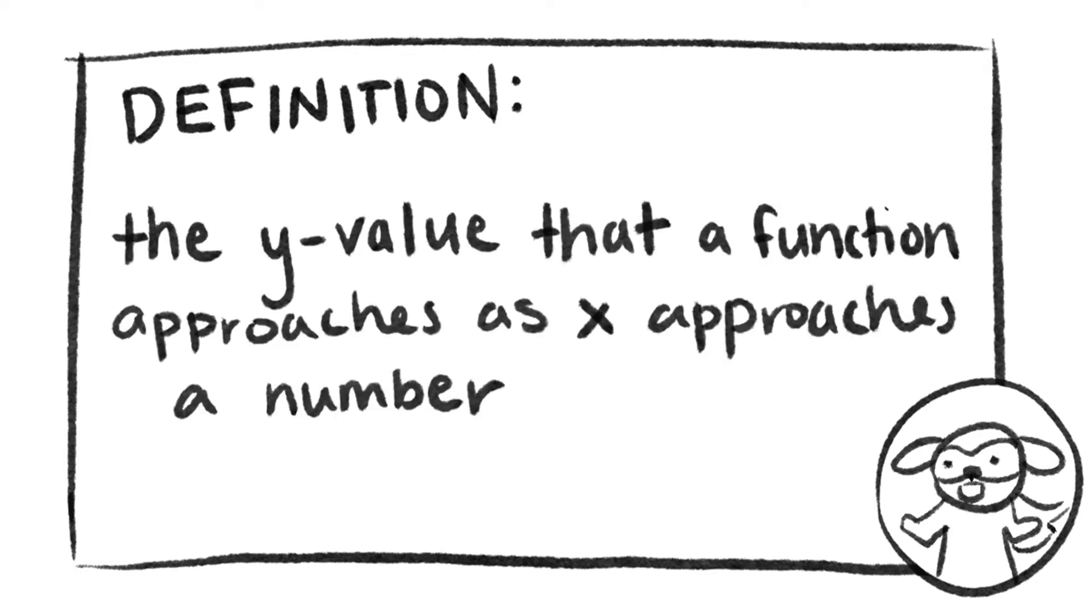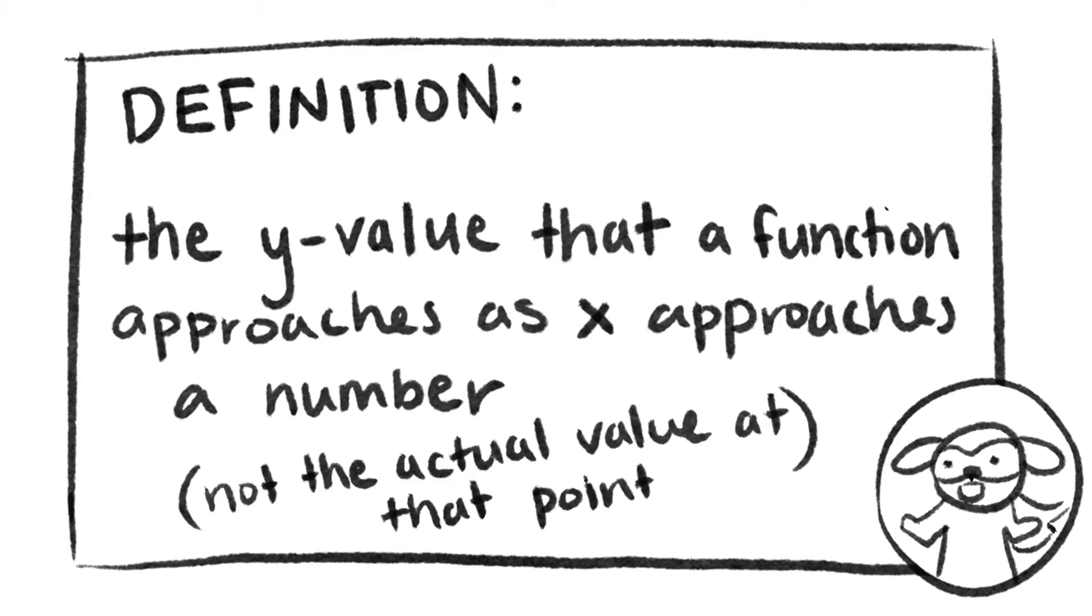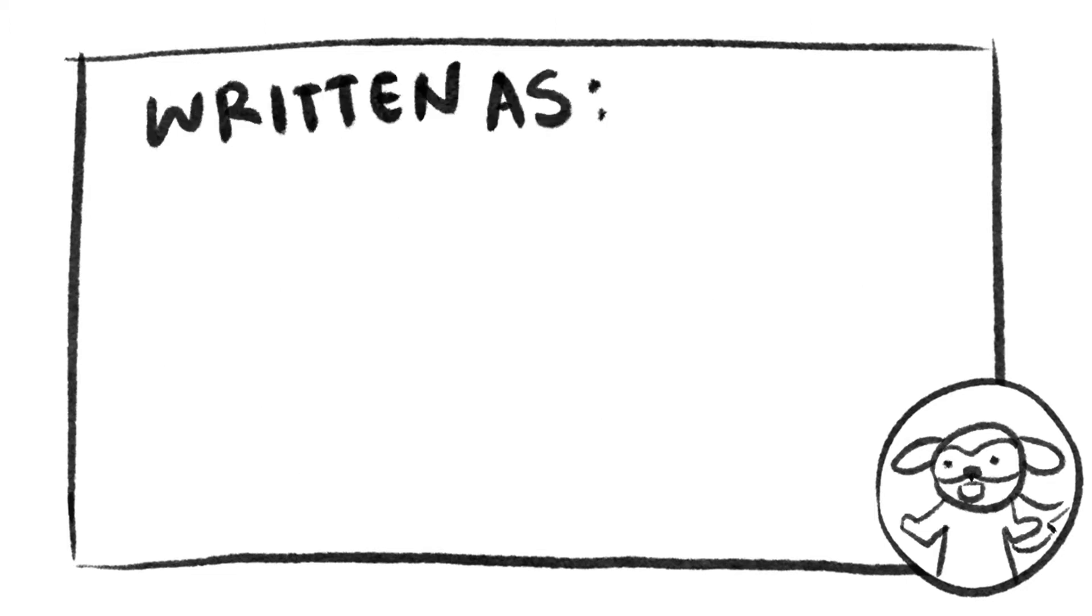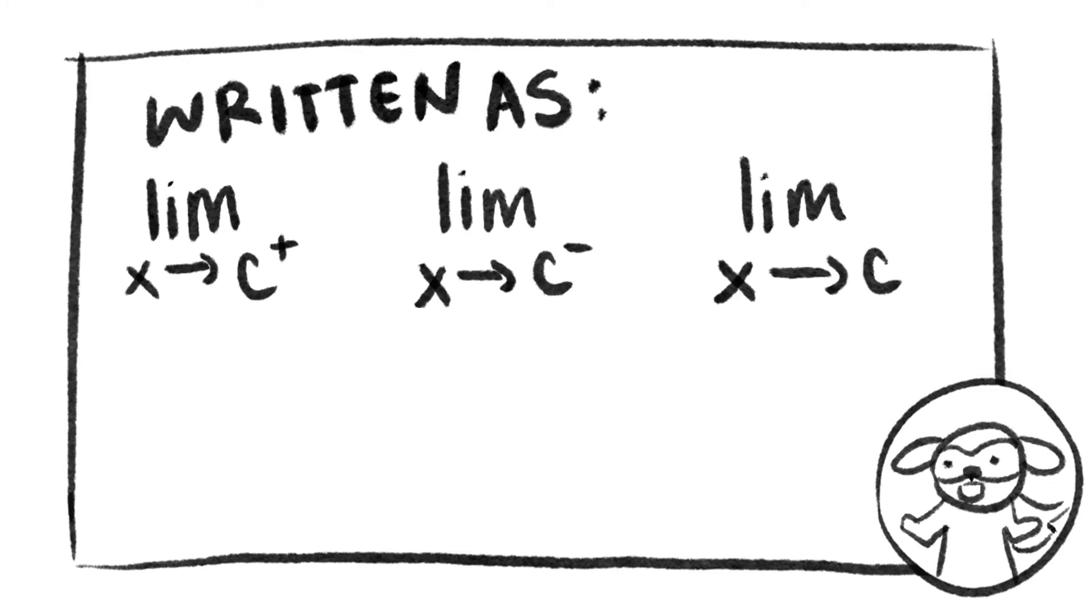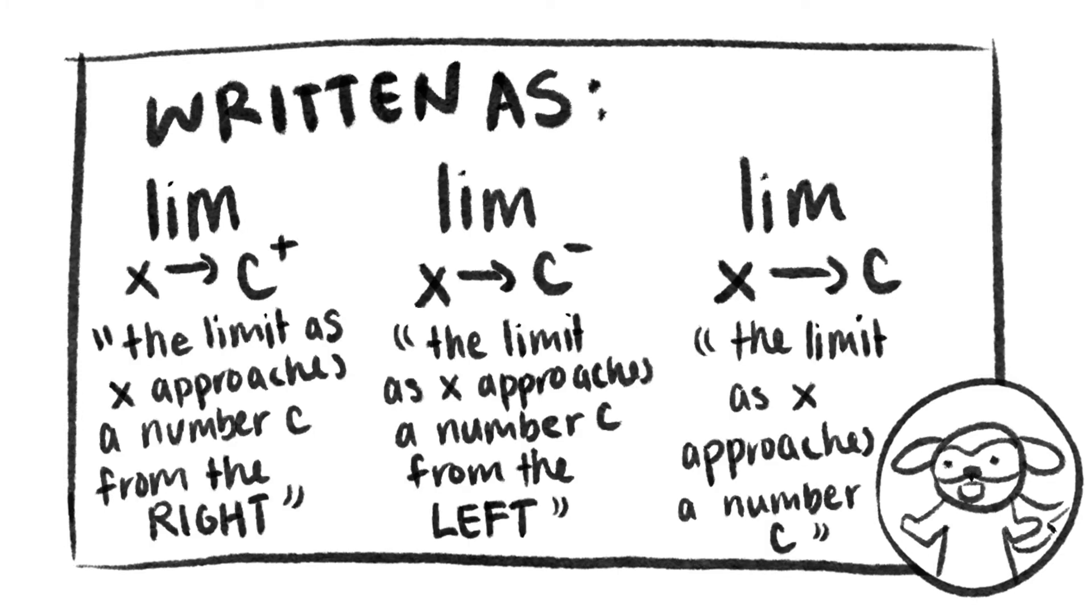A limit is defined as the y value that a function approaches as x approaches a number, not the actual value at that point. It is written as this. And it is said as this: the limit as x approaches a number c from the right, the limit as x approaches a number c from the left, or the limit as x approaches a number c.